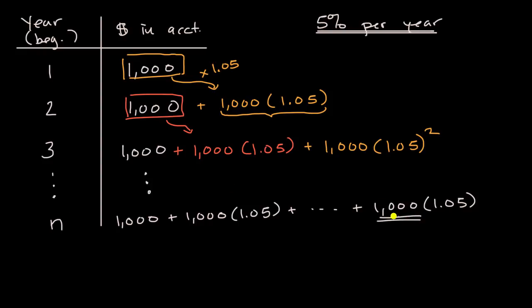So you could view this $1,000 as the one that you put in year one, and then how many years has it compounded? Well, when you go from one to two, you've compounded one year. When you go from one to three, you've compounded two years.